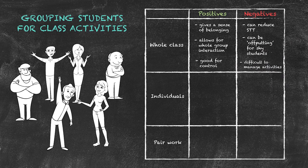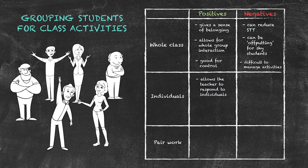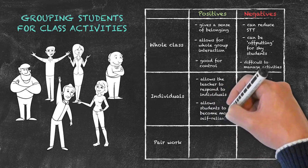Due to some of these potential negatives, what we often try to do is arrange the class in a different way, for example as individuals. What are the potential advantages of arranging the class in this way? Well, it does allow the teacher to respond to individual students. If someone has a particular question, the teacher can talk with them on a one-to-one basis without disturbing everyone else. Another thing is that it will allow the student to become more self-reliant.